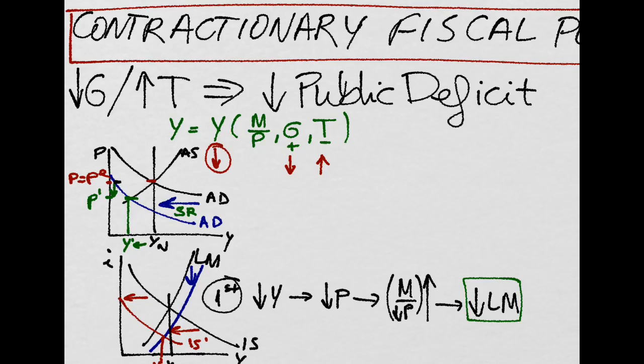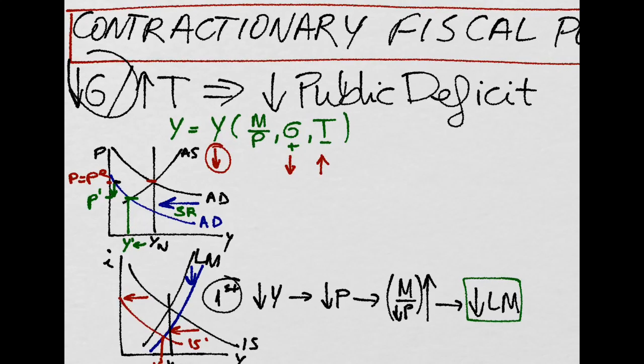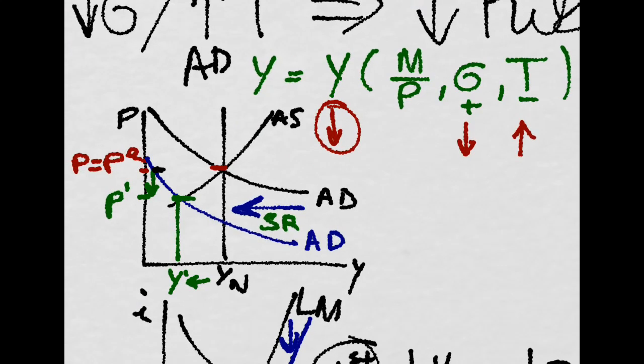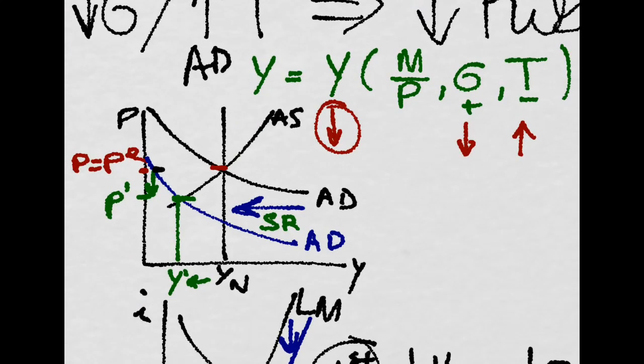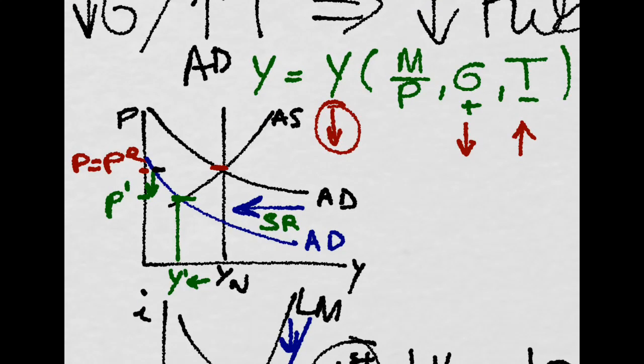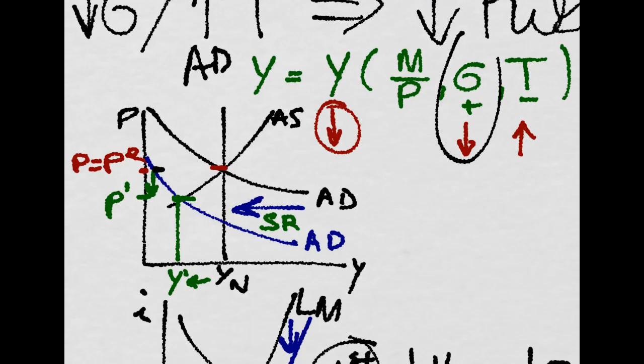We know that in the short run that will provoke a negative shift of the aggregate demand to the left because of the decrease in government expenditure or the increase in taxes, which both have a negative effect on output.